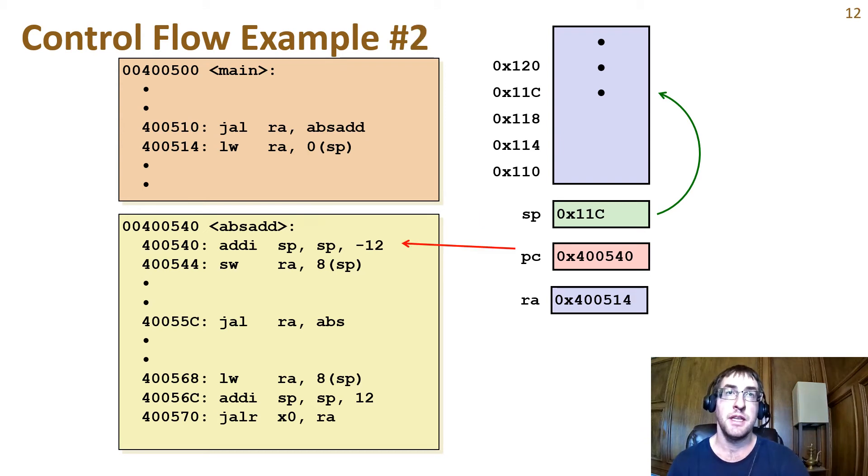The jump and link copies the next instruction's address to the return address register so that the procedure called absadd will return to the next instruction in the program following the call from main. The call finishes by changing the program counter to the address of the absadd label, which is the address of the first instruction in the sub procedure.